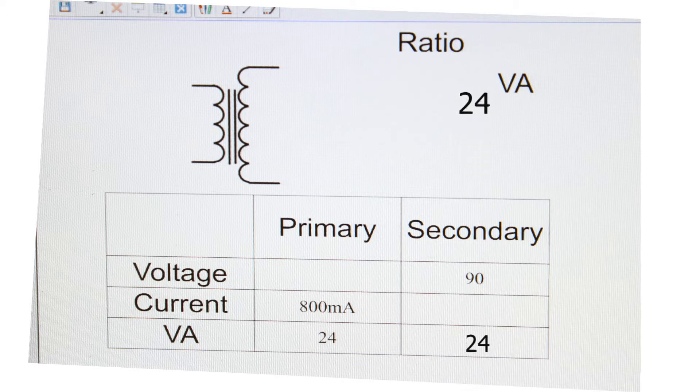We have 24 volt amps for primary, so that will be the secondary in total. 24 divided by 800 milliamps is 30 volts for the primary voltage. 24 volts divided by 90 volts is 266.6 milliamps for the secondary.